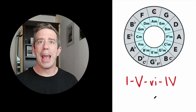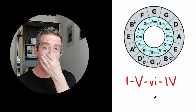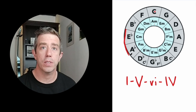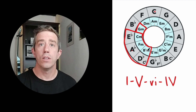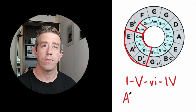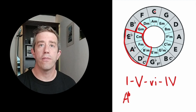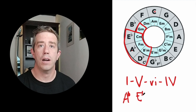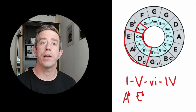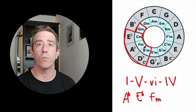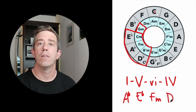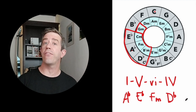What if we want to play that in the key of A flat? No problem — same thing. Circle all those notes around A flat, plus the diminished chord. Start: one is A flat. Count one, two, three, four, five — the five is E flat. For six: one, two, three, four, five, six — F minor. And four: one, two, three, four — D flat. So one-five-six-four in the key of A flat is A flat, E flat, F minor, D flat. Pretty simple.